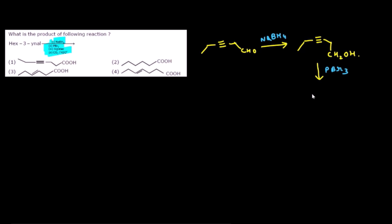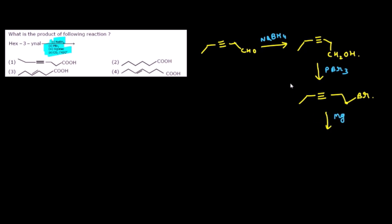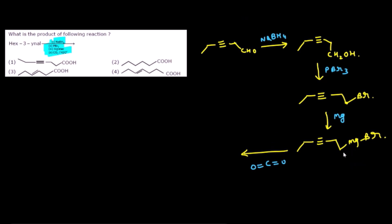Step 2: Reaction with PBr₃ — PBr₃ replaces the OH of alcohol with Br, giving CH₂Br. Triple bond remains unchanged. Step 3: Reaction with Mg in dry ether — this is a typical Grignard reagent preparation, converting the alkyl bromide to a Grignard reagent (MgBr). Step 4: Attack of the Grignard reagent on CO₂ — a very famous reaction where Grignard + CO₂ gives a carboxylate salt (COO⁻), which upon protonation with H₃O⁺ gives carboxylic acid (COOH).